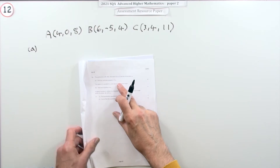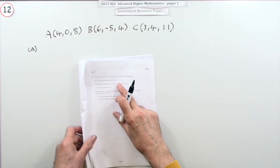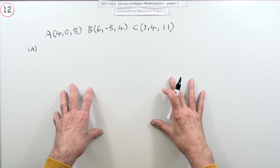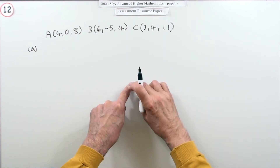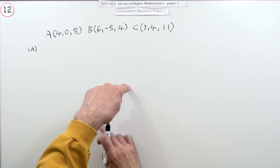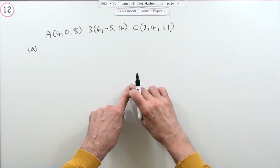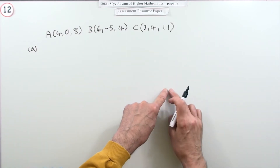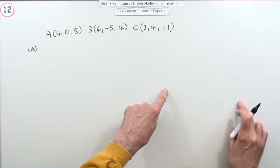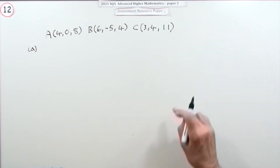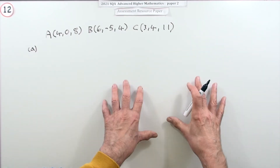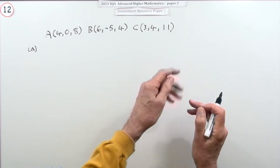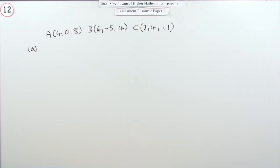In three dimensions, to get the equation of a line you need a point on it and a direction. For a plane you need a point but two directions, so that following steps in those directions can take you to any point on the plane. Doing that would give you the vector equation, because you're using vectors to step your way towards it.